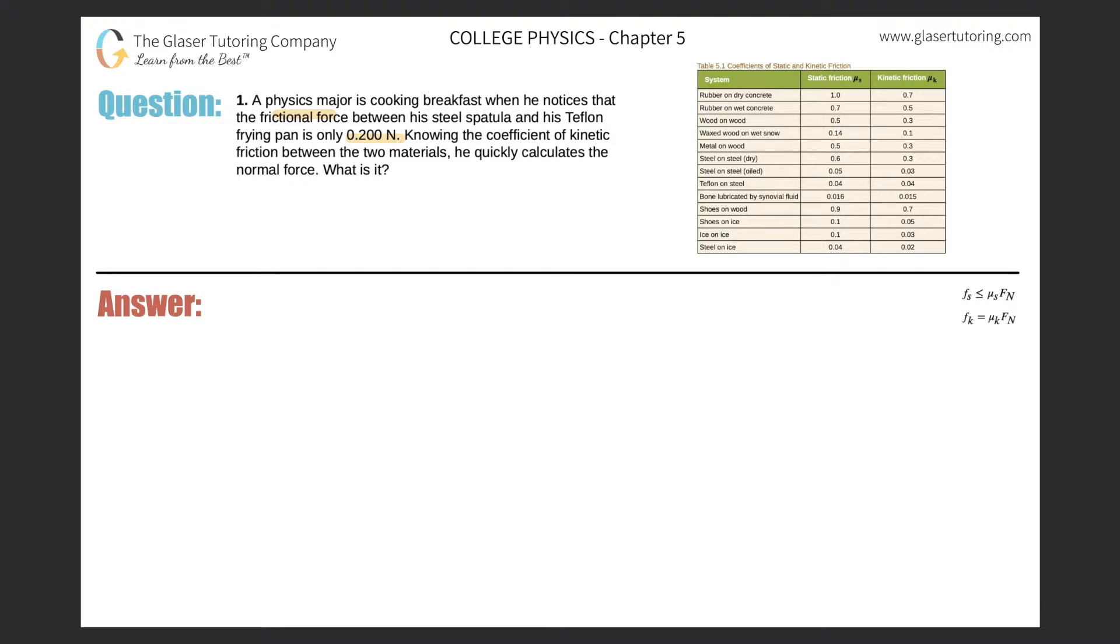I copy and pasted the table from your textbook. We're looking for the coefficient of kinetic friction between the steel spatula and the Teflon frying pan. It looks like right here will be the value, or at least that's the system, and this is the value because we're looking at kinetic friction. Now what we need to do is realize how to relate the kinetic friction, which is represented as mu sub k, and that value is 0.04.